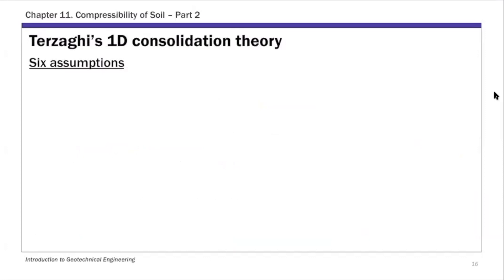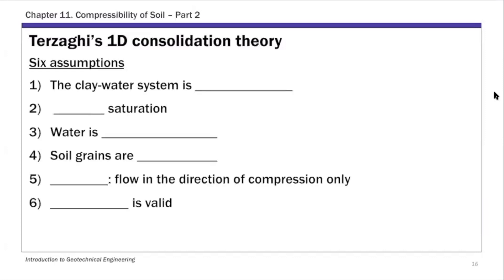There are six key assumptions Terzaghi made in deriving his final solution. The first assumption is that the clay-water system is considered homogeneous. The second is complete saturation, so a fully saturated system. The third assumption is that water is incompressible.